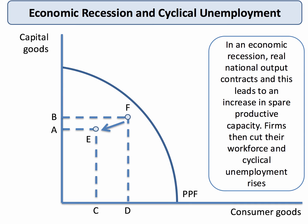Another way you could show cyclical unemployment is to use a production possibility frontier. In a recession, or even in a slowdown, real output is contracting or barely rising at all, and this leads to an increase in spare productive capacity. Firms then decide to control their costs and they may do that by shedding workers, depending on the contractual arrangements they have with their employees. Either way, in a recession we tend to see cyclical unemployment go up — we're moving from point F to point E, moving further away from the production possibility frontier boundary.